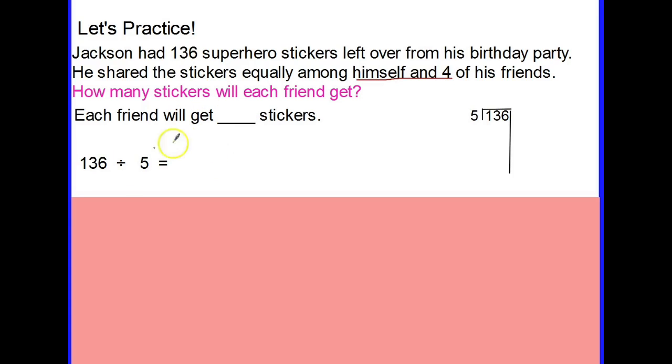We'll set it up as if we were doing our partial quotient. 136 divided by 5. We start out five times 20 and that's going to be 100. We subtract 100 from 136 and we will have 36. Now we will take out more groups of five, this time seven, and seven times five will be 35.